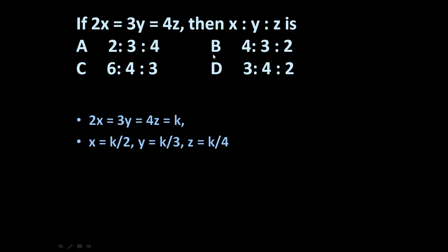We are interested in determining x : y : z. So here we got values of x, y, and z. Therefore x : y : z = k/2 : k/3 : k/4. This is the ratio of x : y : z.